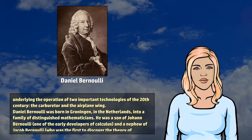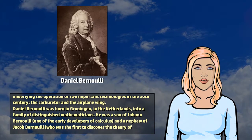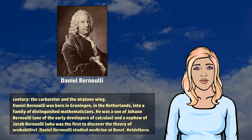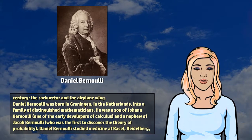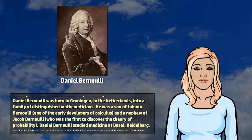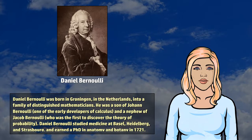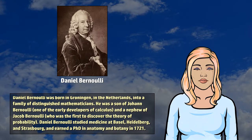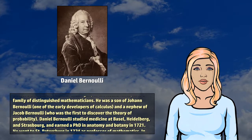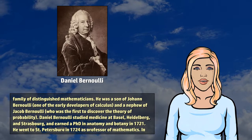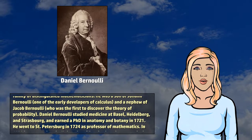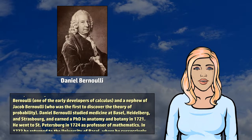Daniel Bernoulli was born in Groningen, in the Netherlands, into a family of distinguished mathematicians. He was the son of Johan Bernoulli, one of the early developers of calculus, and a nephew of Jacob Bernoulli, who was the first to discover the theory of probability.